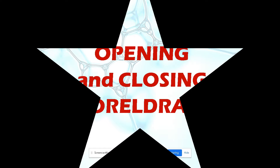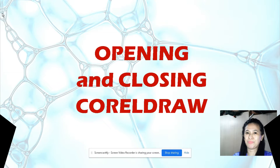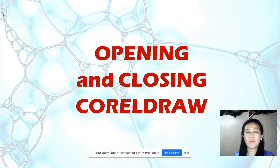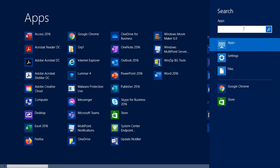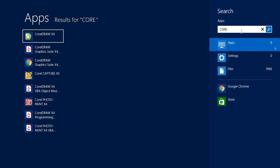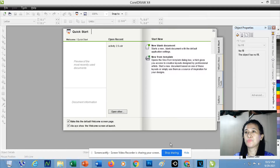How are we going to open CorelDRAW? There are several ways, whether that is Windows 7, Windows 8, or Windows 10. The easiest way is to search for CorelDRAW. I will be opening CorelDRAW by simply searching for it. Click CorelDRAW and just wait for CorelDRAW to open in your Windows environment.